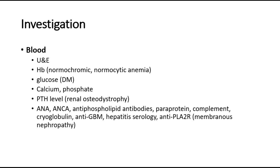Moving on to investigations, these can be divided into blood investigation, urine investigation, imaging, and histology. For blood investigation, you can do a full blood count — expect to see normochromic normocytic anemia. Urea and creatinine assess the renal function. Glucose level can indicate diabetes mellitus. Calcium is expected to be low, phosphate is high, and the parathyroid hormone is expected to be high.